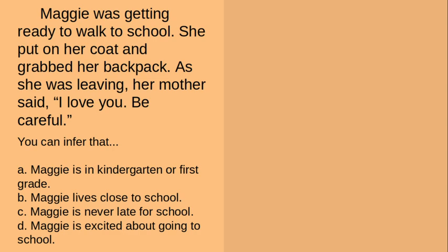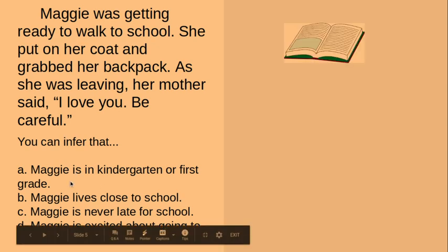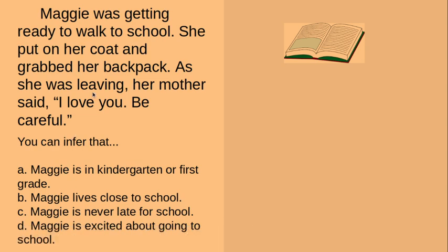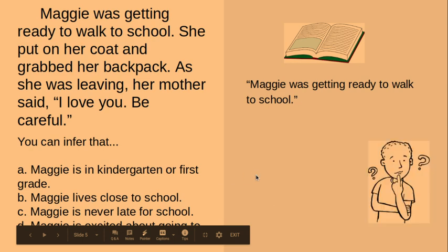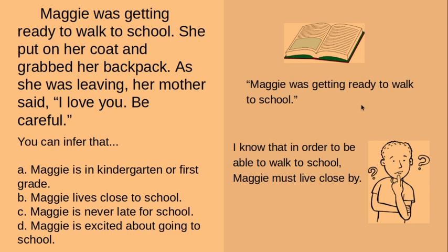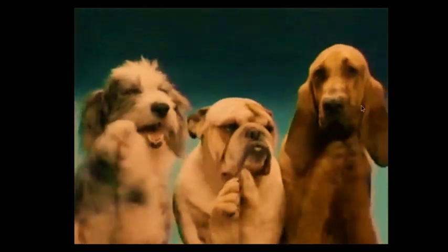I'm going to go through the choices first to see if I have text evidence for any of them. For A, there's really no evidence in the text that gives me a reason to think she's a kindergartner or first grader. For B, it does say that she's going to walk to school, so that could be evidence that she lives close. For C, it doesn't give me any ideas about time or her being in a hurry. And for D, you don't know how Maggie feels about going to school — there's no evidence for that. My text evidence is: 'Maggie was getting ready to walk to school,' which really only goes with B. When I use my background knowledge, I know that in order to walk to school, Maggie has to live close by. So if you chose B, good job, guys. Nice work.